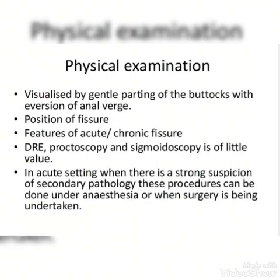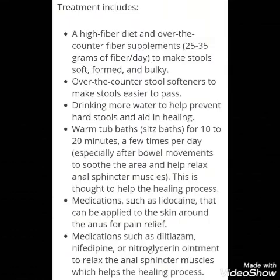Diagnosis is made by physical examination. Visualization is done by gently parting the buttocks with eversion of the anal verge. A longitudinal tear and a hypertrophic thickened skin is seen near the lower end of the fissure, i.e., sentinel pile. Per rectal examination can be done and sphincter spasm can be appreciated. DRE, proctoscopy, and sigmoidoscopy are of little value; proctoscopy is contraindicated because the condition is very painful.